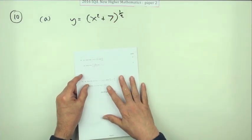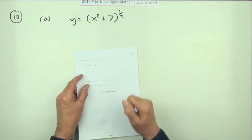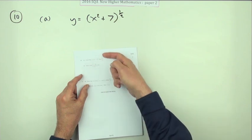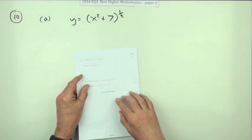Question 10 from paper 2 of the 2016 New Higher, just a little 3 mark question. It's essentially an integration question where you've been led to the answer in part A.